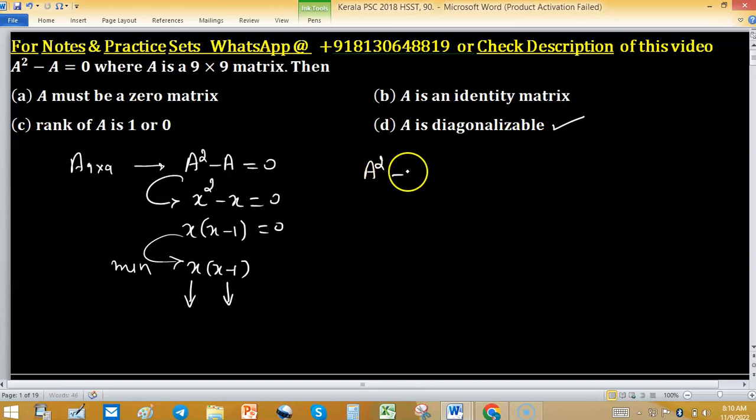And A squared minus A equals 0, it means that A squared equals A, means A is idempotent matrix. And we know that eigenvalues of idempotent matrix are 0 and 1.